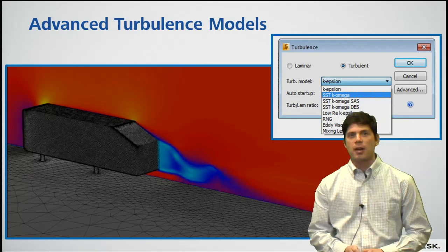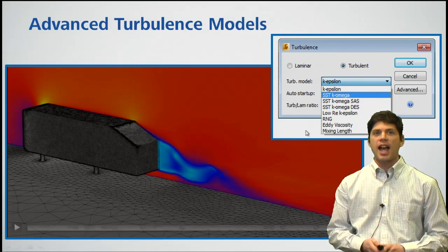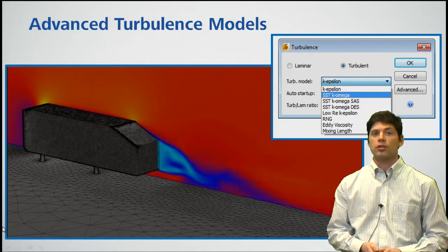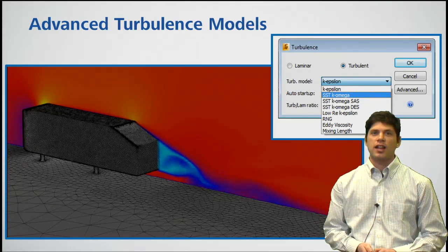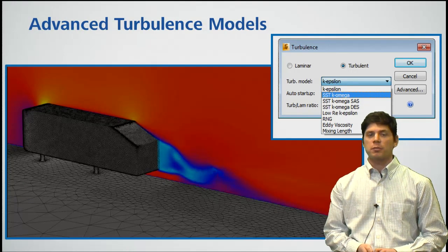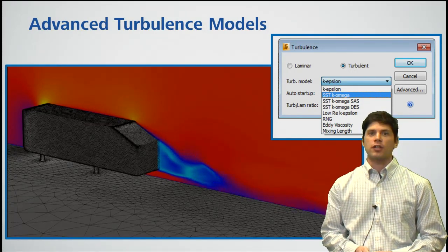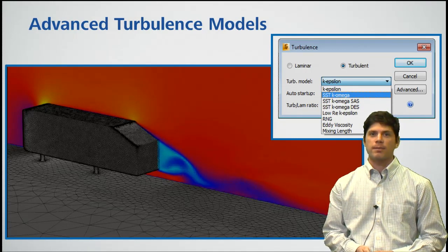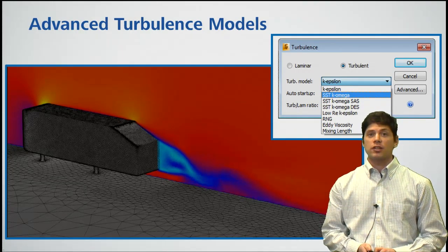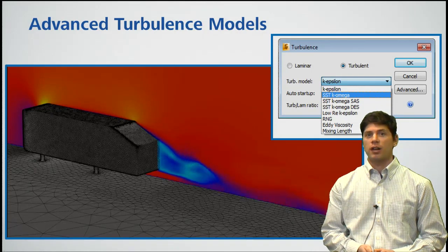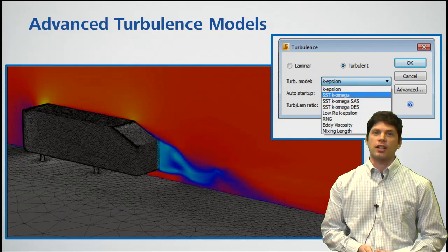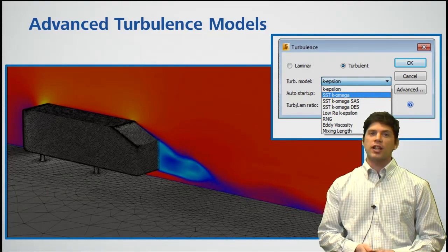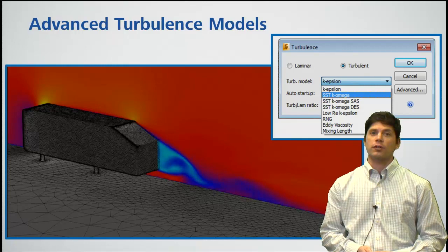Another area that came out of these conversations with customers is they're interested in getting as accurate results as possible using new advanced turbulence models. Our team reviewed a number of different models and implemented the most powerful ones to give users more capability in the software. These new SST K-Omega models are showing outstanding accuracy on a wide range of applications, particularly those involving external flow or internal flow applications where separation is critical.